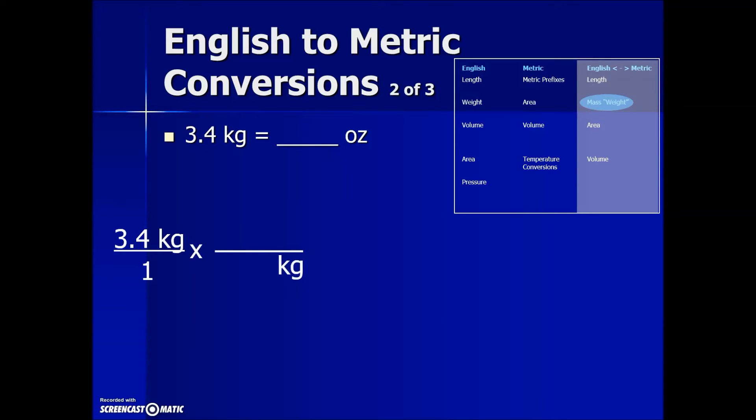When we look in the table, we're looking for a value that's going to cancel out our kilograms, the given unit of measurement. We see from the table that one pound is equivalent to 0.454 kilograms. Placing that kilogram value in the denominator and its equivalent in the numerator, we essentially are multiplying by one, which allows our kilograms to cancel out.